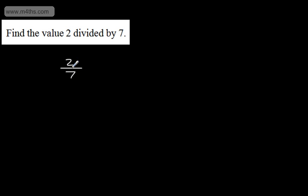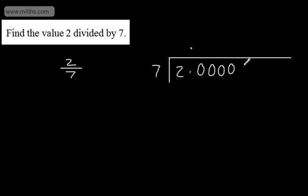Let's look at another one. Calculate 2 divided by 7. How many times does 7 go into 2? We set up the bus stop with 7 on the outside and 2 on the inside, then 2.00000 and so on. Does 7 go into 2? No. Does 7 go into 20? Yes — it goes in twice, giving 14, with a remainder of 6. Does 7 go into 60? 8×7=56, so we get 8 with a remainder of 4.